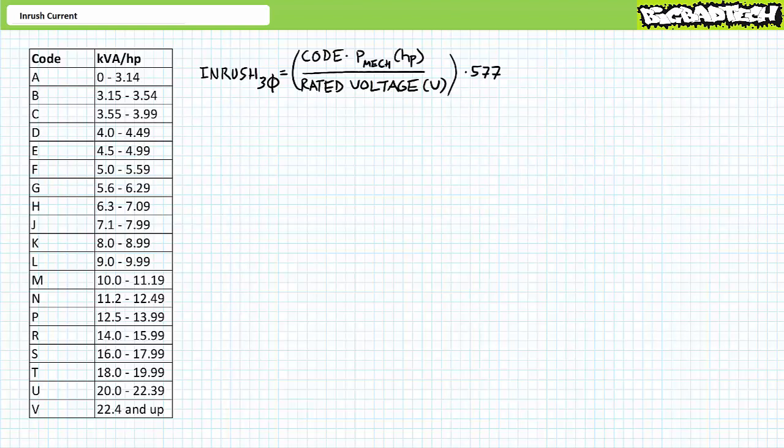For this reason, reduced voltage starting techniques like primary resistor reduced voltage starters, part winding reduced voltage starters, Y-start delta run reduced voltage starters, and soft starters, among other techniques, are employed to reduce inrush current and mitigate its negative effects. Lacking these techniques, a technician must at times calculate the anticipated inrush using the information available on the motor nameplate, so that wire size and instantaneous demand in the electrical distribution system can be predicted in advance.